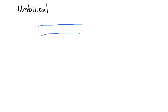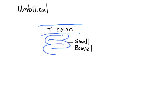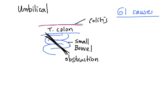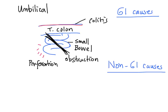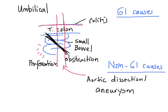What about the umbilical area? What lives there? The transverse colon and the small bowel. GI causes therefore include colitis, bowel obstruction, and perforation. For non-GI causes, the aorta runs right there. Therefore, any aortic disorder such as dissection or aneurysm can give pain to that area. Interestingly, even though the appendix does not live in this area, early appendicitis can give pain in this area.